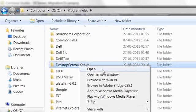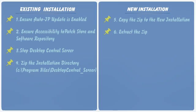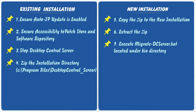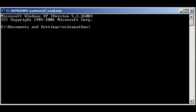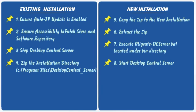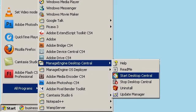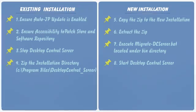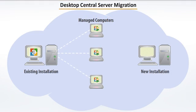Now, start the Desktop Central server from the new installation. You can select the Start Desktop Central option from the Start menu to start the server. Once all the agents start communicating with the new installation, you can stop and uninstall the old installation.